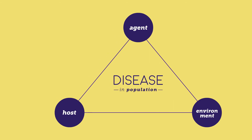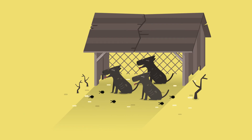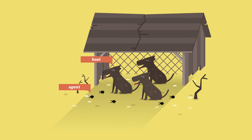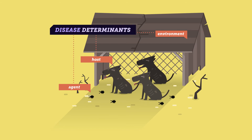Disease in a population is governed by the interaction of agent, host, and environment. For example, a group of old dogs are sick in a poorly managed kennel. The factors contributing to disease here are the presence of disease-causing bugs — the agent — the age of the animals — a host factor — and the dirty kennel — an environmental factor.